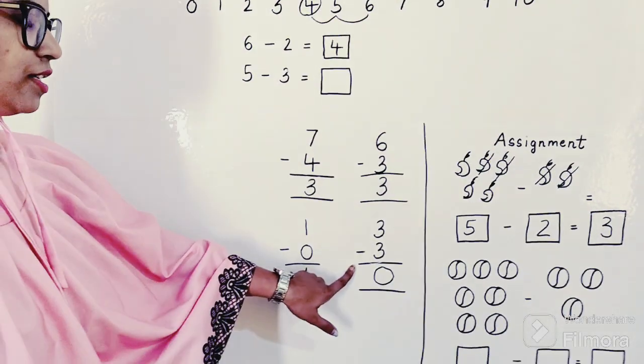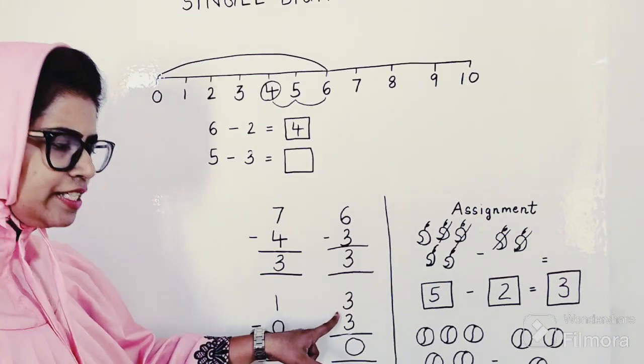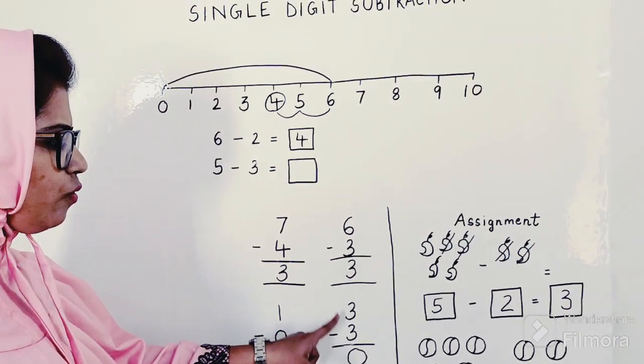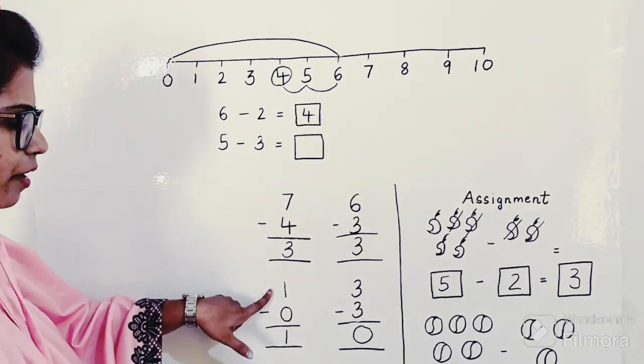So whenever you subtract the same number from itself—1 minus 1, 2 minus 2—the answer remains 0. And whenever you subtract 0 from some number other than 0, then the answer is always the number.